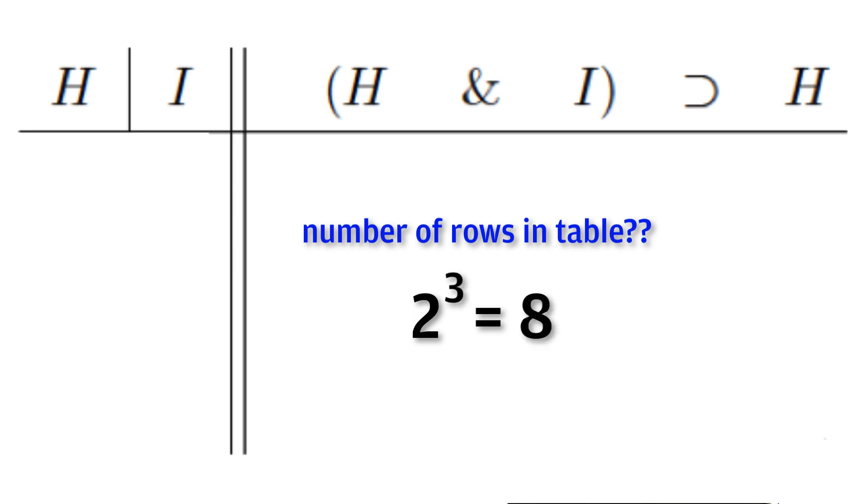For a truth table with three variables, we would raise base two to the third power, or two times two times two, thereby requiring a truth table with eight rows.